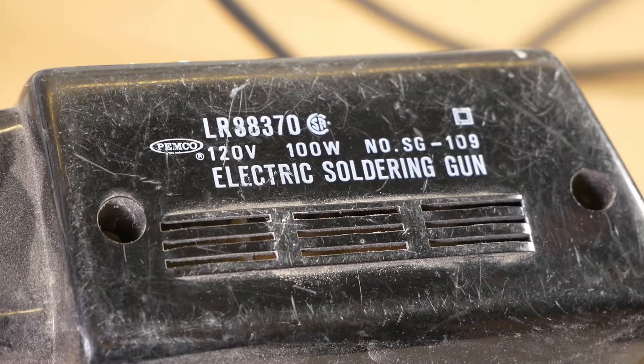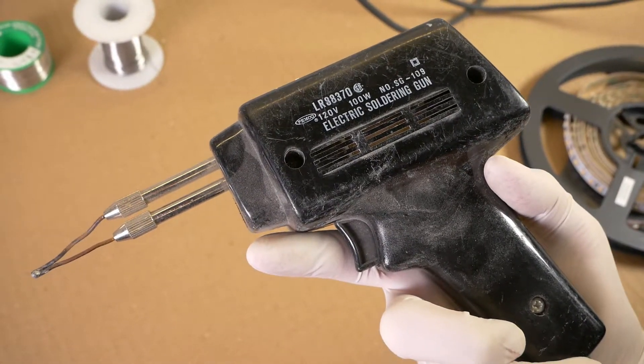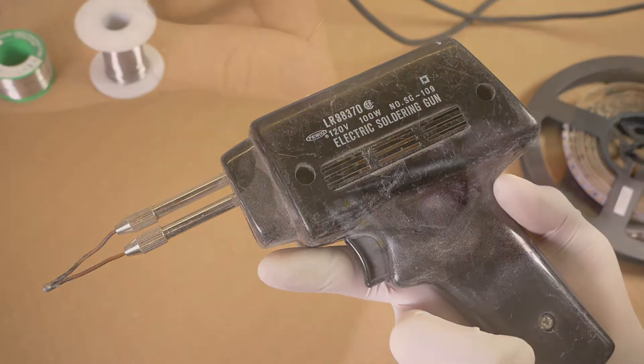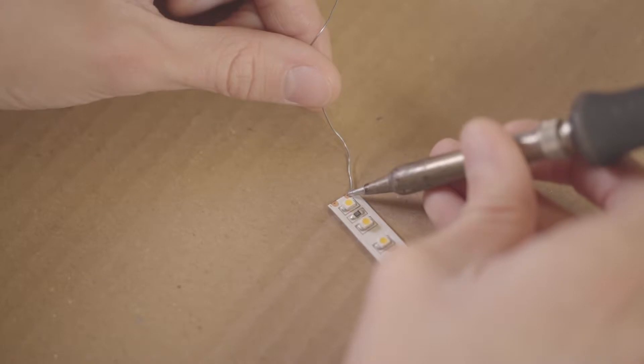But don't use one of these 100 or 200-watt soldering guns. It's too much heat, and you can easily damage the strip and LEDs. Actually, any soldering iron can damage components if you hold it on too long, even a 35-watt one, so you want to work efficiently.